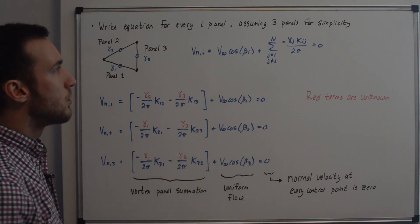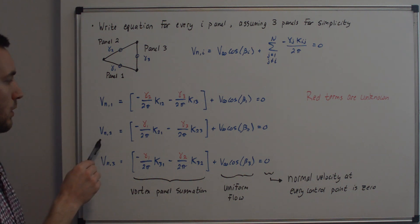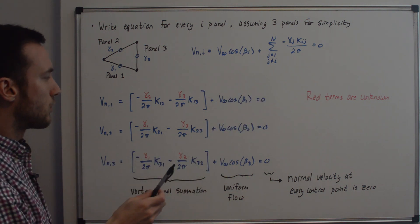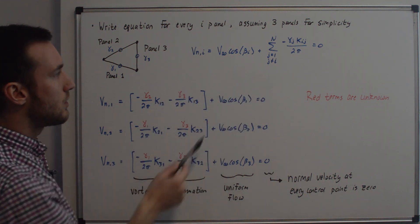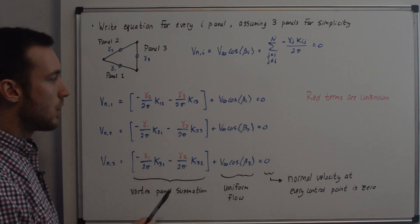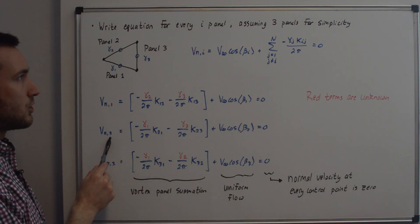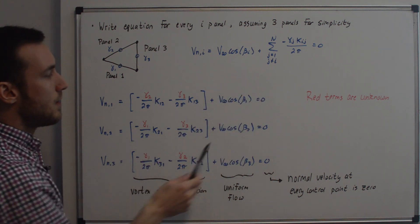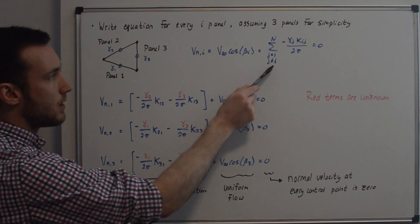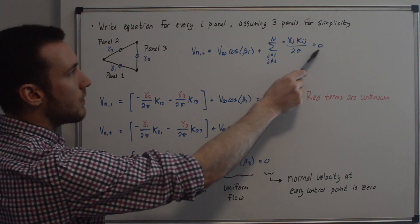Let's go over the i equals 2 equation. We're getting the normal velocity on the i equals 2 panel. Starting with j equals 1: we have minus gamma_1 over 2 pi times k_21 — 2 because we're on i equals 2, 1 because j equals 1. For j equals 2, that means i equals j, so that term is 0. For j equals 3: we have minus gamma_3 over 2 pi times k_23, where 2 is from the i-th panel and 3 from the j-th panel. Then we add the uniform flow contribution, which is v_infinity cosine beta_2 for the i equals 2 panel. This all equals 0.